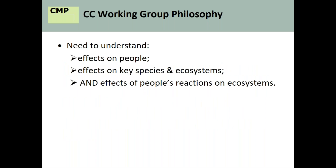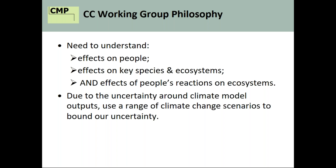Part of our philosophy is that we need to understand climate change effects on people, on the key species and ecosystems we're trying to conserve, and we also need to understand people's reactions — because those reactions may in fact be worse than the direct impacts on species and ecosystems. We need to anticipate how people will react to climate impacts and how those reactions will in turn affect the ecosystems and species we work with.